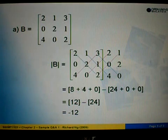So from here, we simplify 8 plus 4 equals 12 minus 24 plus 0 plus 0 equals 24. So 12 minus 24 equals negative 12. Therefore, the determinant for this matrix equals negative 12.